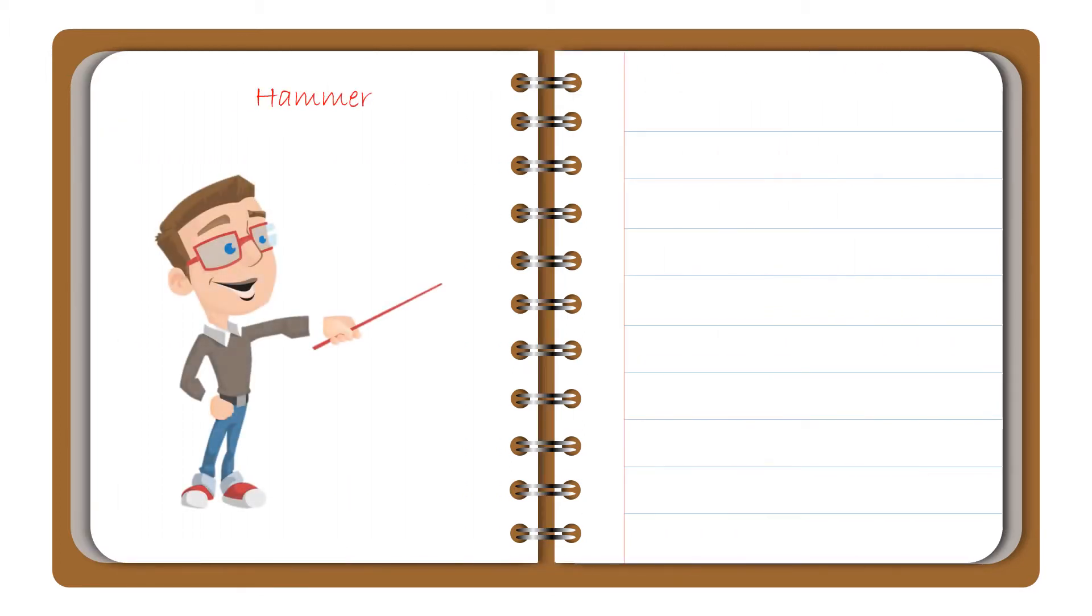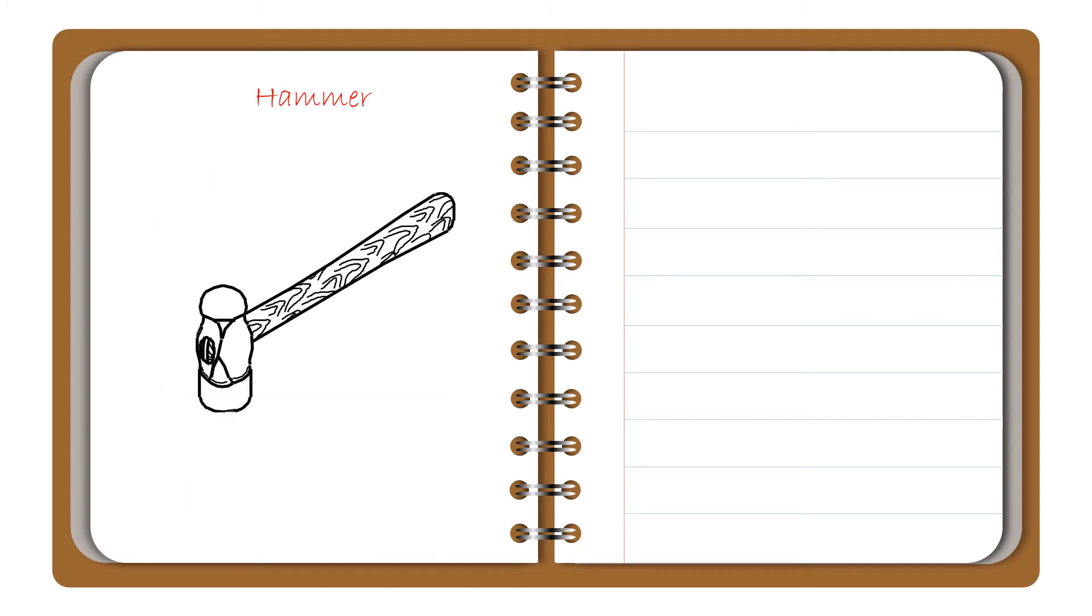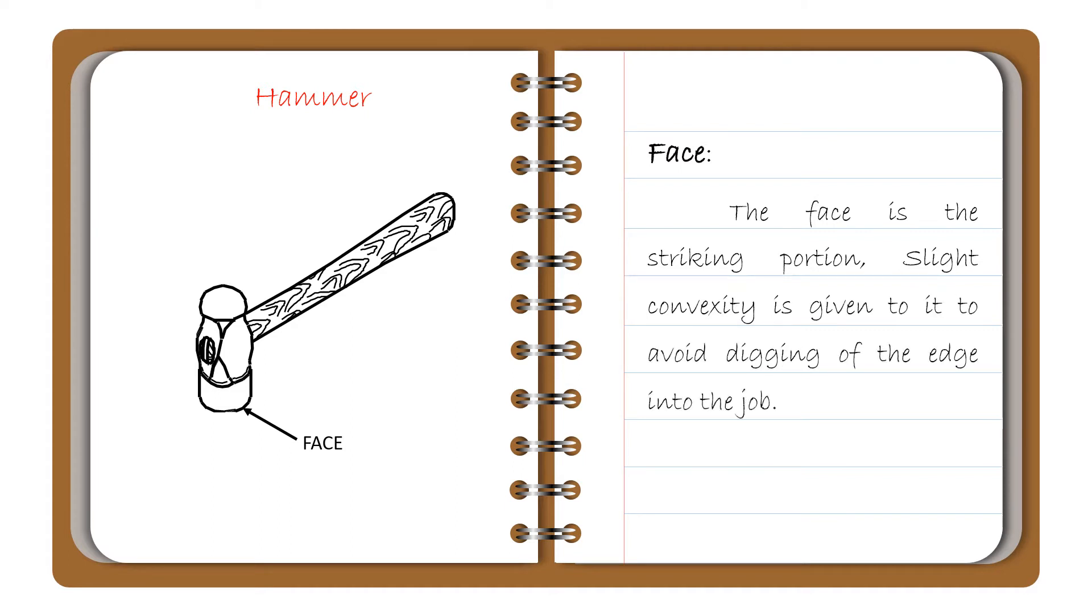Let's see the definition of the parts of hammerhead one by one. The first one is face. The face is the striking portion. Slight convexity is given to it to avoid digging of the edge into the jaw.